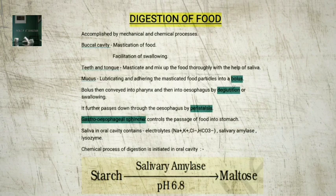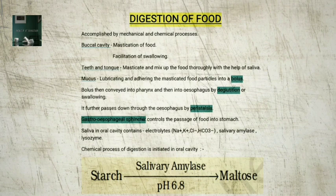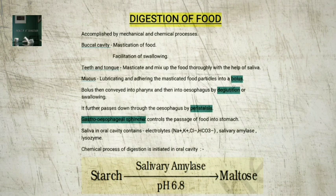The process of digestion is accomplished by mechanical and chemical processes. The buccal cavity performs two major functions: mastication of food and facilitation of swallowing. The teeth and the tongue, with the help of saliva, masticate and mix up the food thoroughly. Mucus in saliva helps in lubricating and adhering the masticated food particles into a bolus. The bolus is then conveyed into the pharynx by swallowing or deglutition, and it further passes down through the esophagus by peristalsis. The gastroesophageal sphincter controls the passage of food into the stomach. The saliva secreted into the oral cavity contains electrolytes Na⁺, K⁺, Cl⁻, HCO₃⁻, and the enzymes salivary amylase and lysozyme.